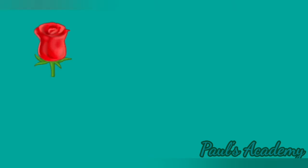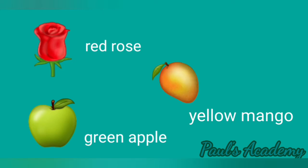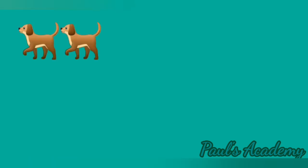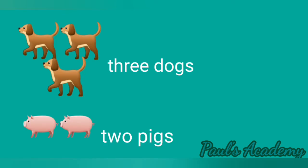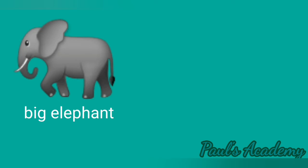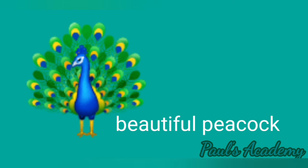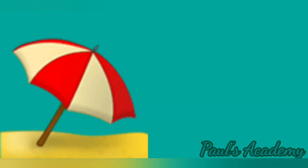Some more examples are: red rose — the naming word rose is described as red. Green apple, yellow apple, yellow mango. Three dogs, two pigs, five fishes. Big elephant, tall boy, short girl, beautiful peacock, colorful umbrella.